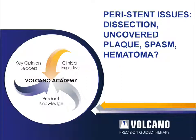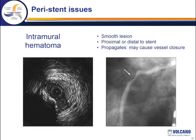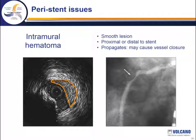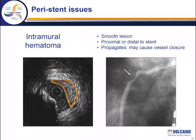Let's move on to peri-stent issues, which usually revolve around dissection, uncovered plaque, spasm, or intramural hematomas. Intramural hematoma has a very characteristic IVUS appearance. The angiogram will show a very smooth lesion either proximal or distal to the stent, and it can propagate — I think it is the most common cause of acute vessel closure about one to two hours after a stent has been placed. The ultrasound appearance is usually a D-shaped, very homogeneous collection of blood in the vessel wall between the media and adventitia.